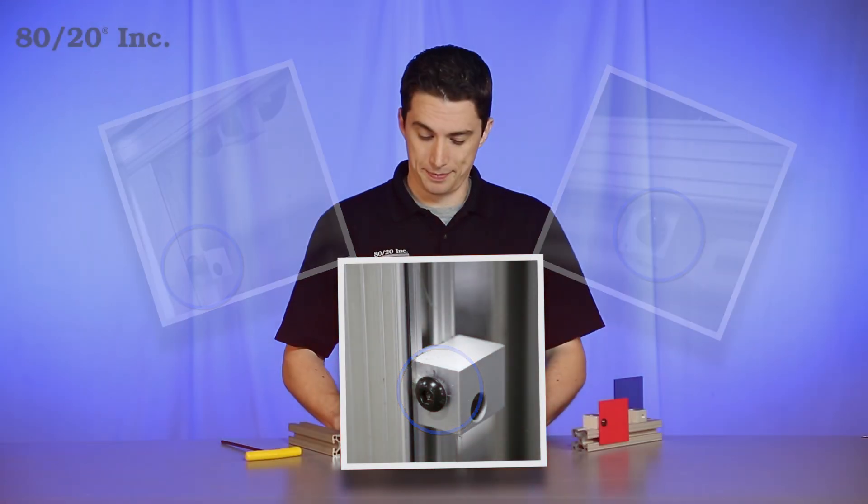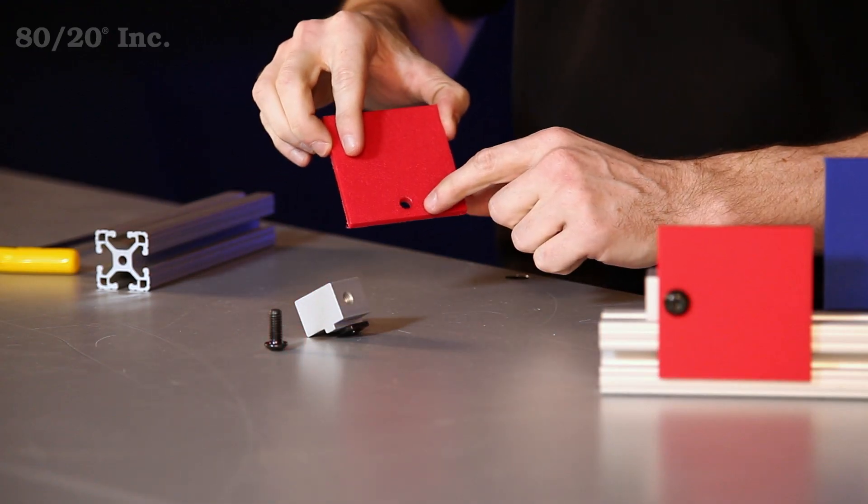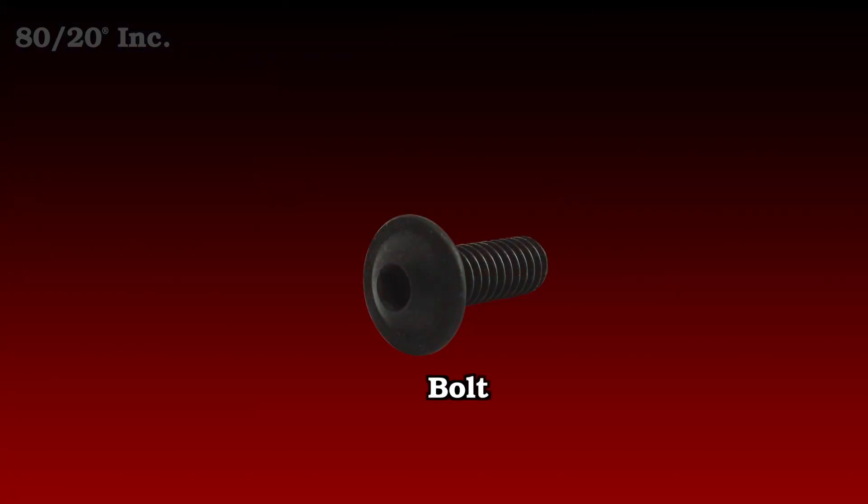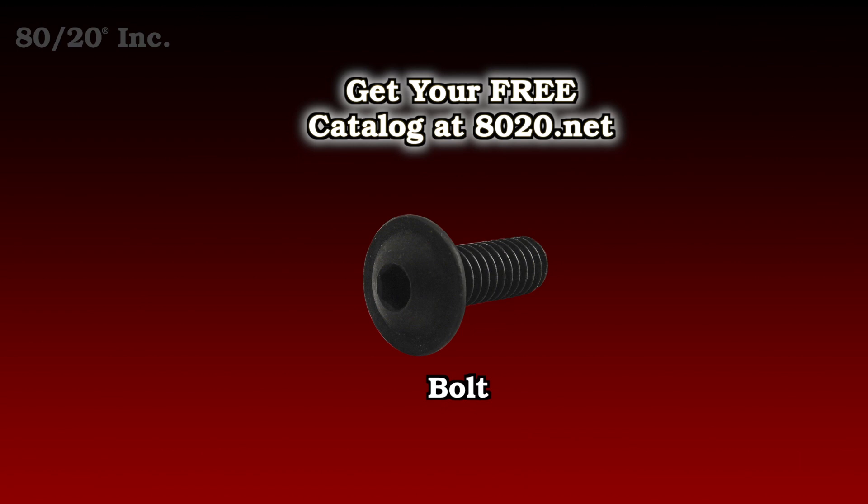Now one thing you'll want to keep in mind is your panel is going to need a drill through surface to attach it to the block. You'll also need a bolt to secure your panel to the block as well. More information on 8020's machining surfaces and hardware can be found in 8020's product catalog.